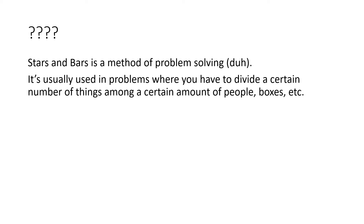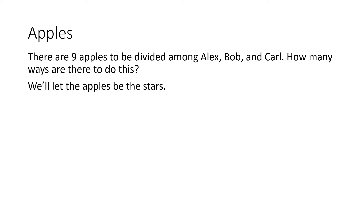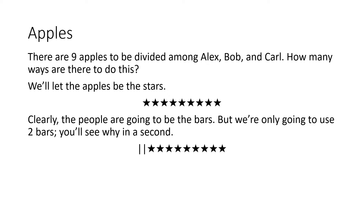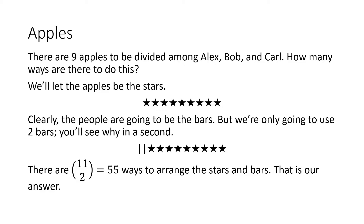Let's look at a problem. There are nine apples to be divided among Alex, Bob, and Carl. How many ways are there to do this? Well, let the apples be the stars. We have nine stars and the people are going to be the bars, but we're going to use two bars. There are two bars and nine stars, so there are 11 things total, so our answer is 11 choose 2, or 55 ways to arrange the stars and bars.